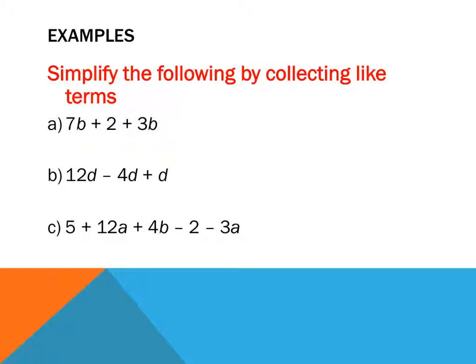So it says simplify the following by collecting like terms. I have 7b plus 2 plus 3b. I have three terms all together, but I have two sets of like terms. I have 3b and 7b, and then I have a 2. So what I've done is I've underlined in different colors the different types of terms. Then I read from left to right. That's a positive 7b plus 3b. So 7b plus 3b is 10b, so equals 10b, and now I can't group this plus 2 because it's a different one. So I hit plus 2, and that's as far as I can simplify it.